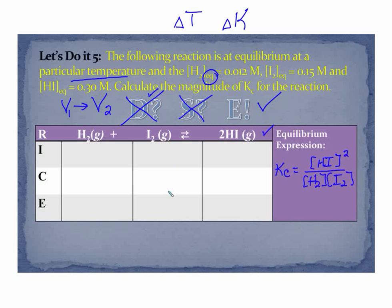Notice in this case they gave us equilibrium values, so we're going to put that in the E row, the equilibrium row. H2 is 0.012, I2 is 0.15, and HI is 0.30.